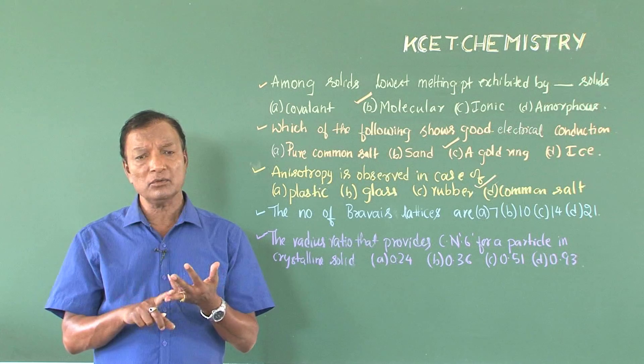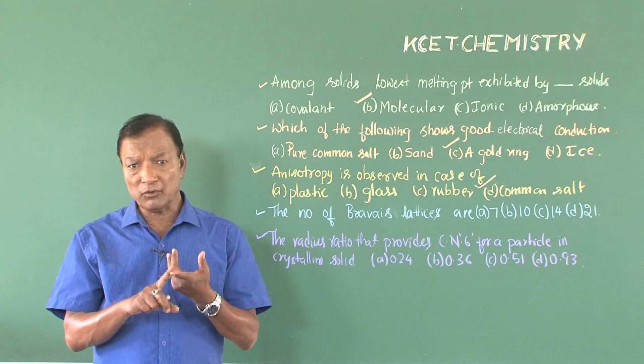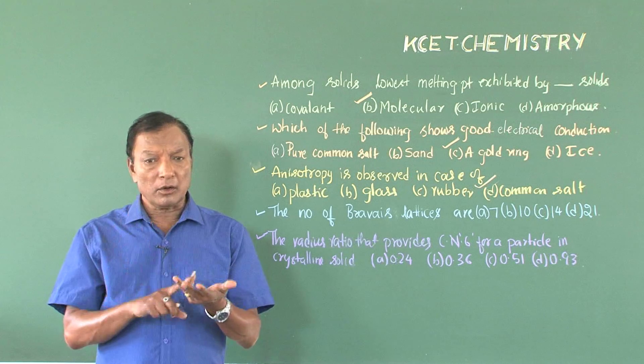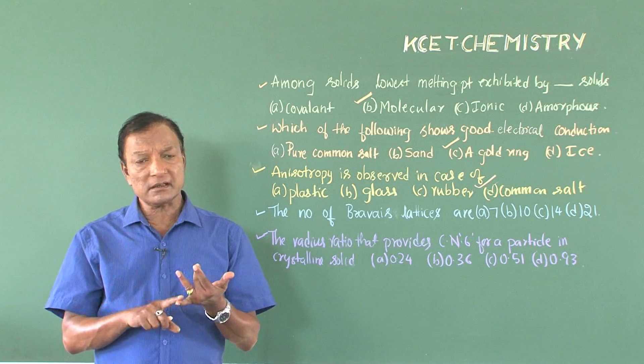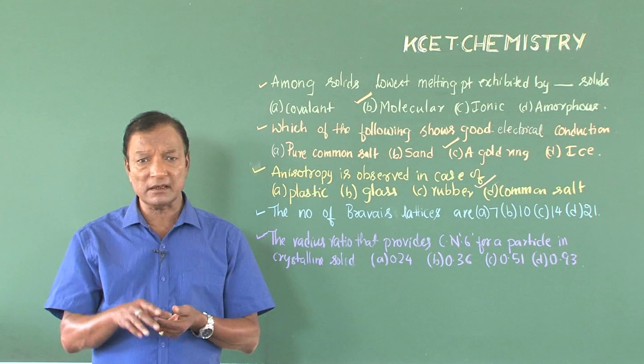These seven basic unit cells are number one, monoclinic; number two, triclinic; number three, tetragonal; number four, hexagonal; and number five, orthorhombic; number six, rhombohedral; and number seven, cubic. Seven unit cells.